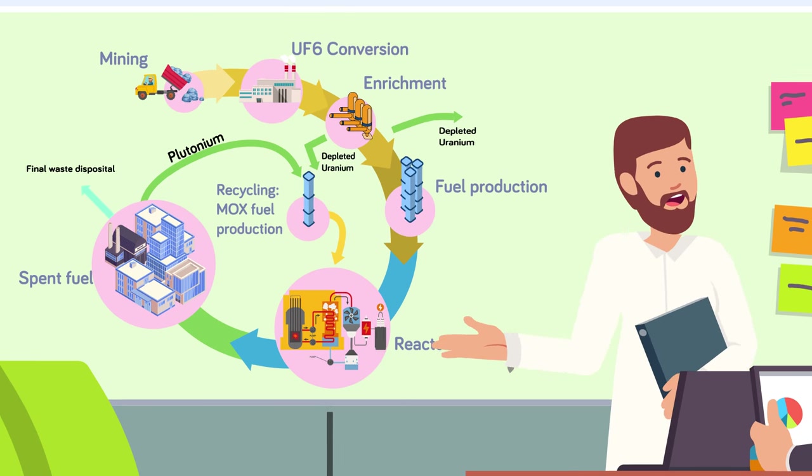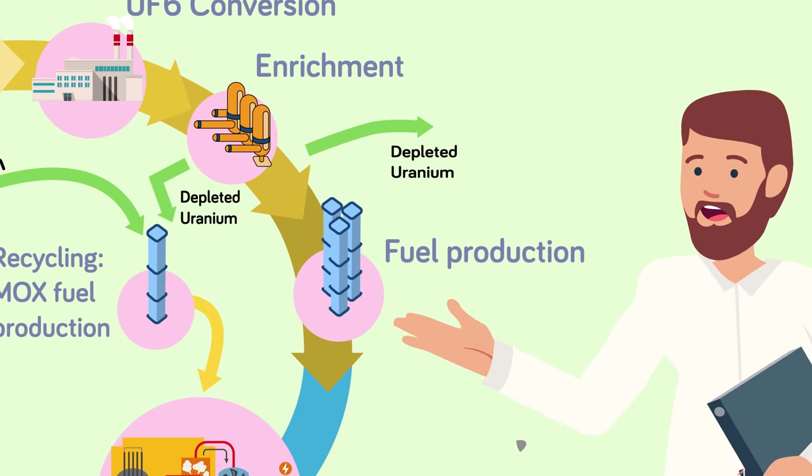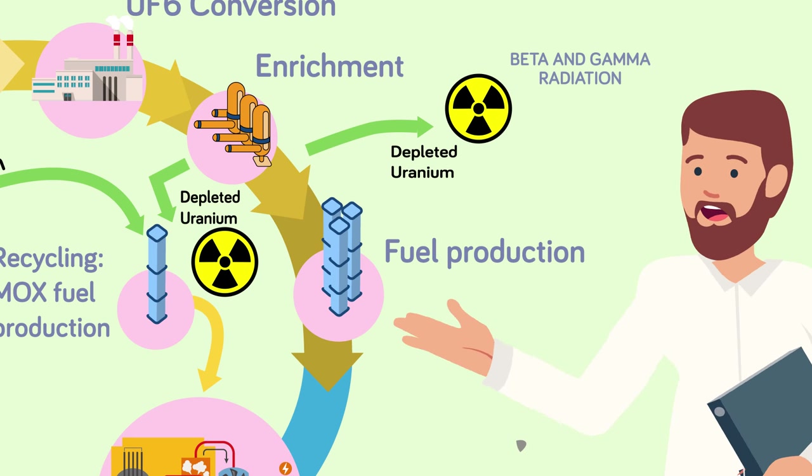Back-end nuclear waste comes from spent fuel rods and is packed with beta and gamma radiation. These powerful energies come with extremely long half-lives and are formed in nuclear reactors.